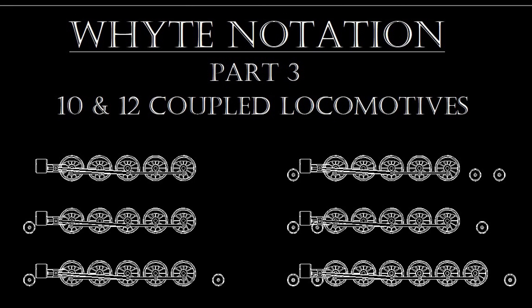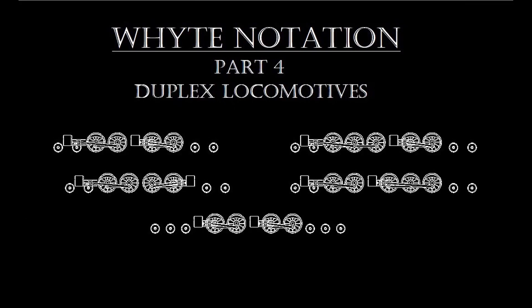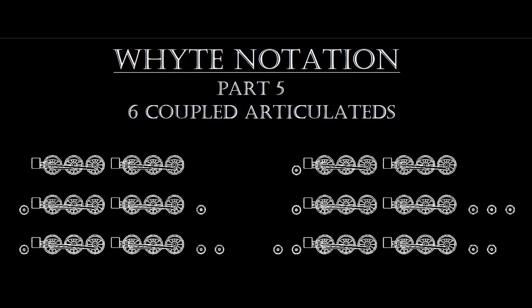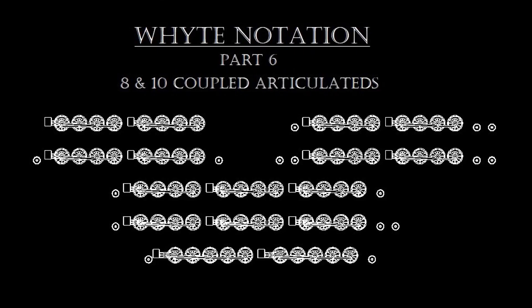The white notation is a system that classifies steam locomotives by their wheel configuration — in other words, the number of non-driven leading wheels, the number of coupled drive wheels, and the number of non-driven trailing wheels. We'll take a look at some of the more famous and noteworthy locomotives of each type, as well as the names by which each type is commonly known. All this and more coming up next on American Steam Legacy.